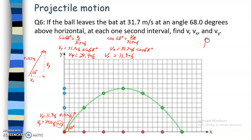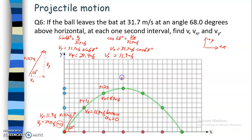I'm going to stick with up being the positive y direction and to the right being the positive x direction. Moving on to t equals one second: v sub x is going to be 11.9 meters per second, because a sub x is equal to zero. So at t equals two seconds, v sub x is also 11.9 meters per second. Even at t equals three seconds at the peak, v sub x is still 11.9 meters per second — there's nothing causing the horizontal motion to change.